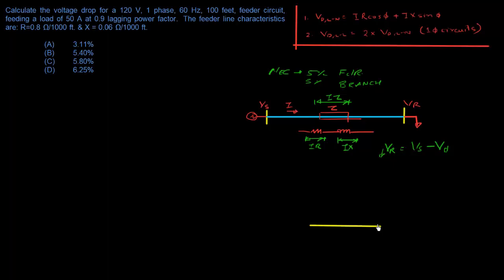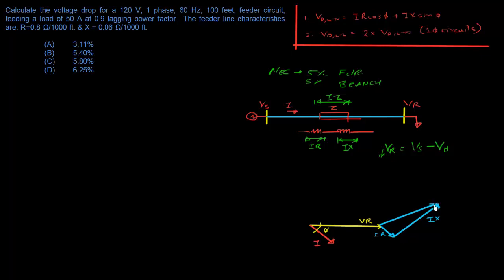The receiving-end voltage V_R is our reference value. Since this is an inductive load, the current lags our voltage by the power factor angle phi. I·R is in phase with I, and I·X is perpendicular to I·R — 90 degrees apart. The resultant of I·R and I·X is I·Z.